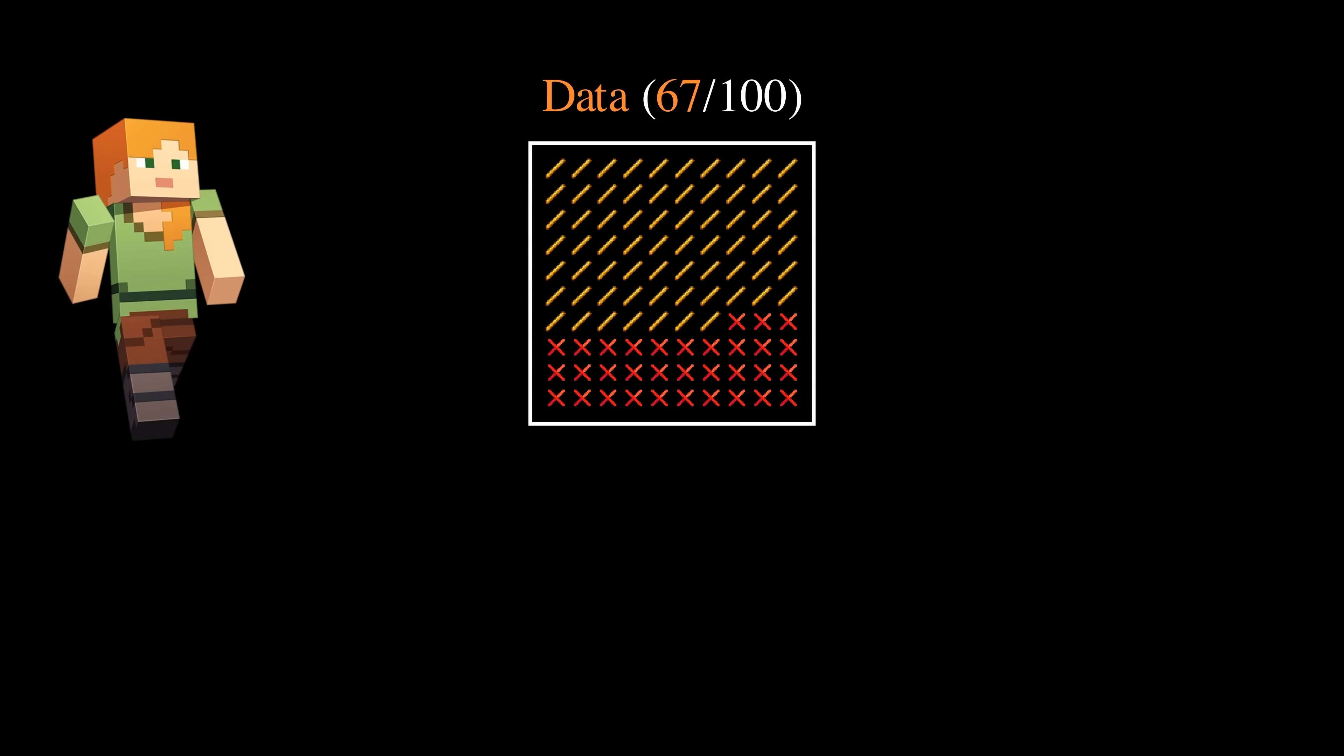Since blazes are only supposed to drop a rod 50% of the time, 67 out of 100 seems a little too high, and so you suspect that they might be cheating by increasing the probability of a blaze rod.